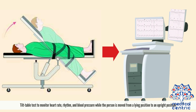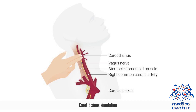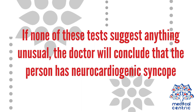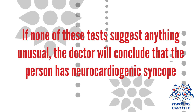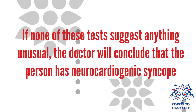A tilt table test may be used to monitor heart rate, rhythm, and blood pressure while the person is moved from a lying position to an upright position. Carotid sinus stimulation may also be performed. If none of these tests suggest anything unusual, the doctor will conclude that the person has neurocardiogenic syncope.